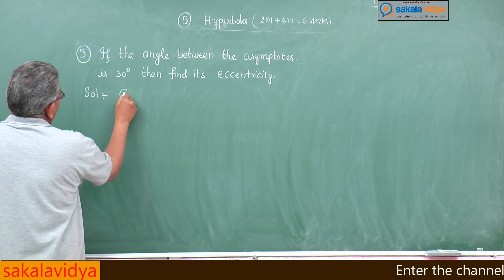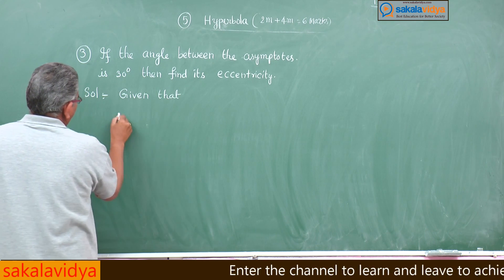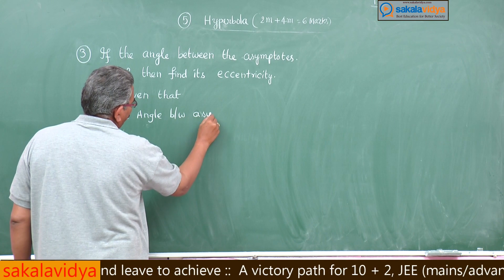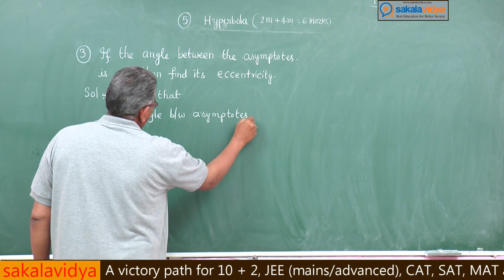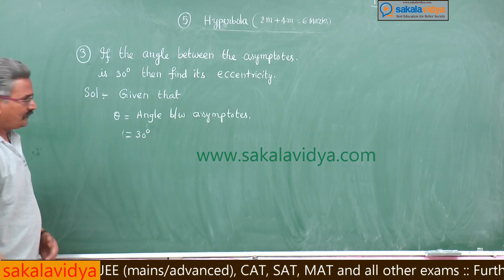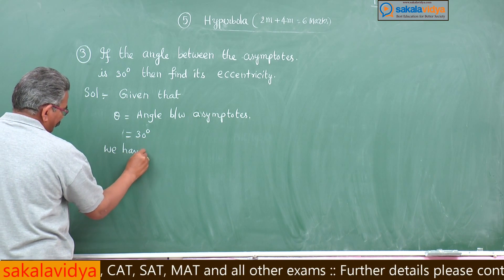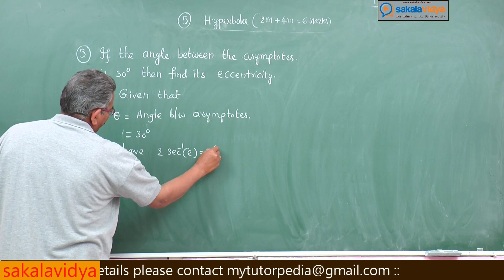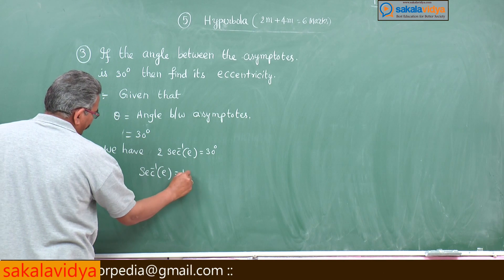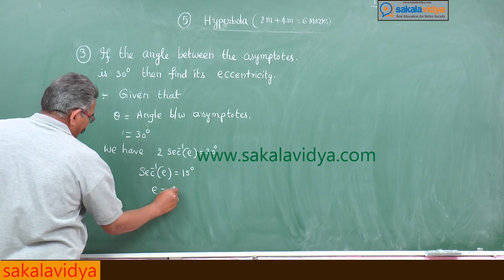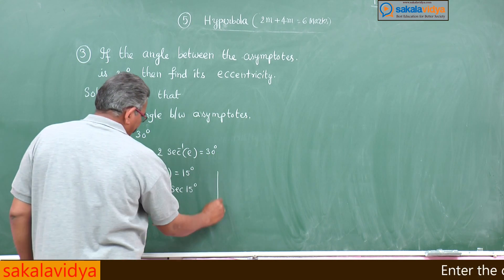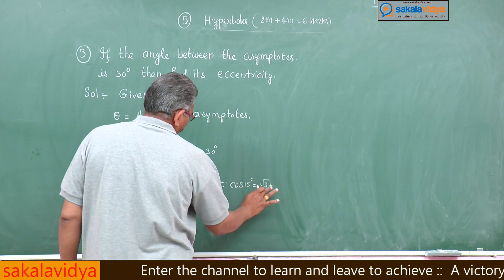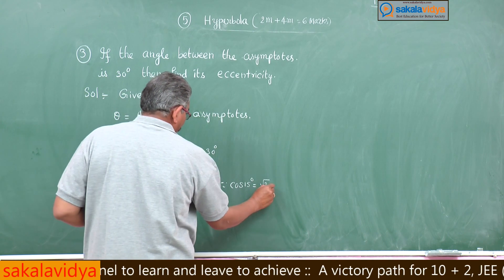Given that theta, the angle between the asymptotes, is equal to 30 degrees. We have 2·sec⁻¹(E) = 30 degrees, so sec⁻¹(E) = 15 degrees, that is E = sec(15°). Since cos(15°) = (√3 + 1)/(2√2).